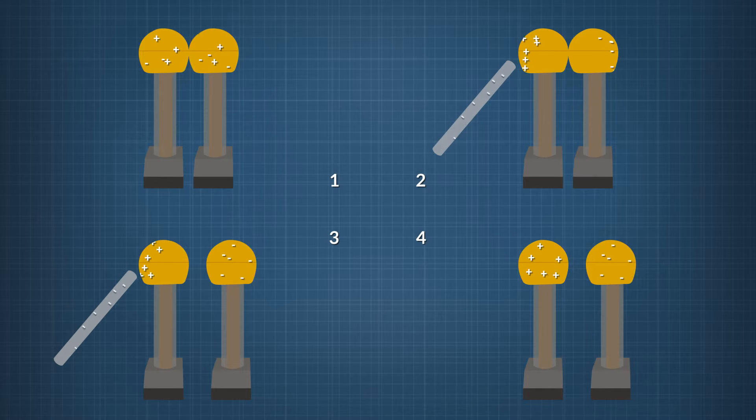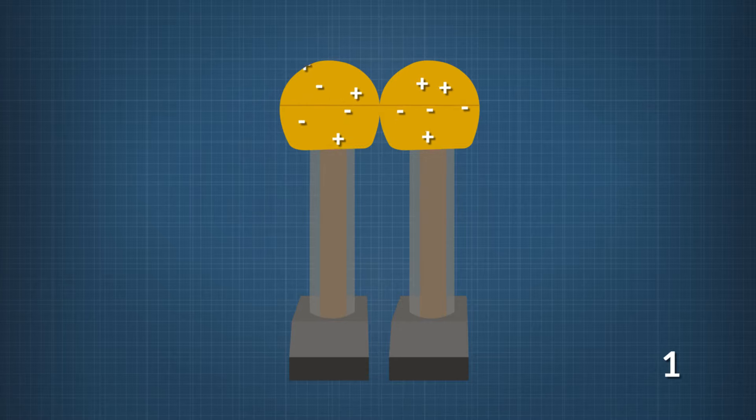In our first snapshot, we have two neutral metal spheres in contact. Since neither has a charge imbalance, there is no net charge on either one. A net charge of zero means there is an equal number of protons and electrons on both spheres to draw in on the diagram.